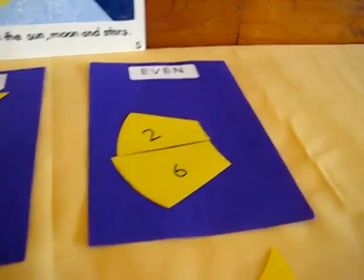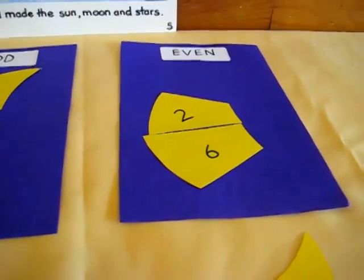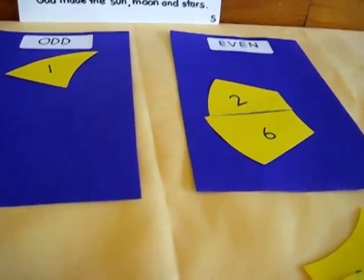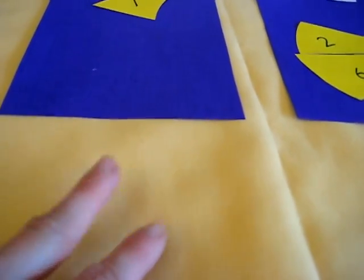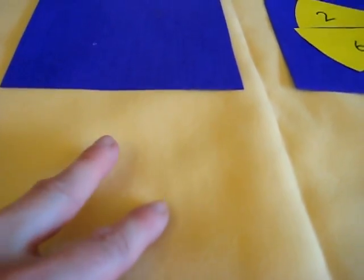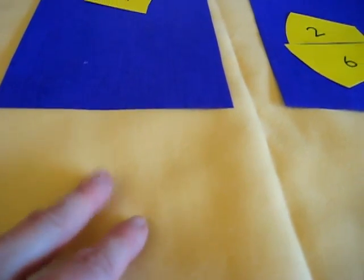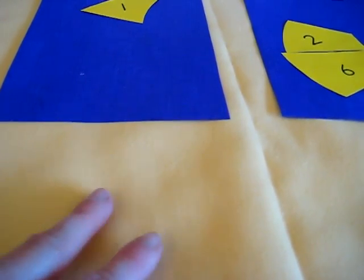What we do with odd and even to find out if they're odd or even, something really helpful and easy that I found to work for my little boys, we put out our fingers. Two. Does this one have a, do they have a partner? Yes, they have a partner, so they're even.